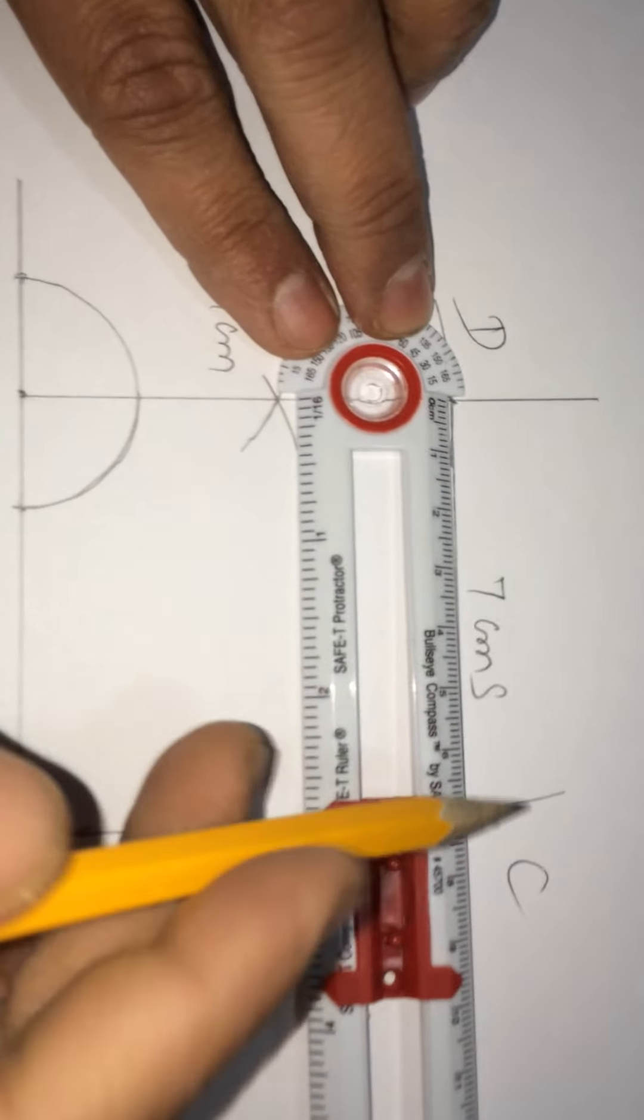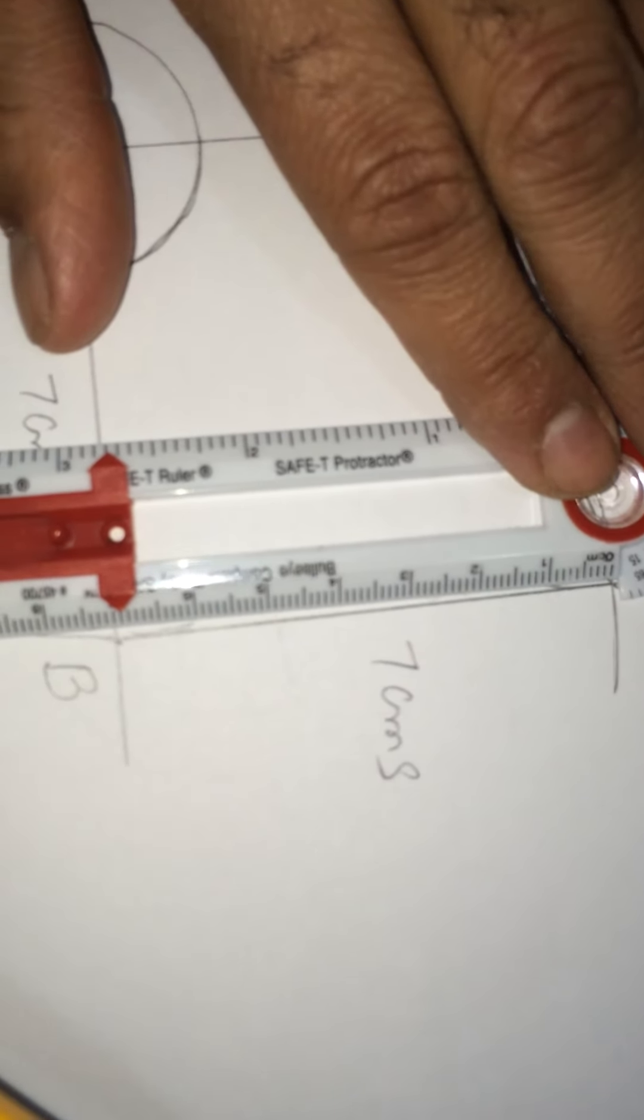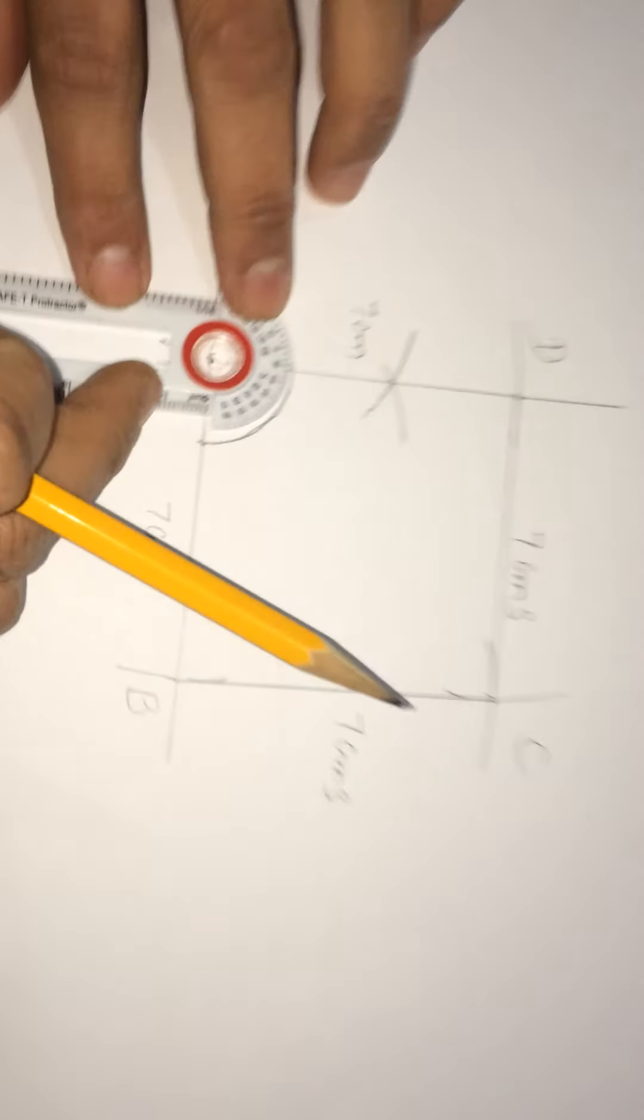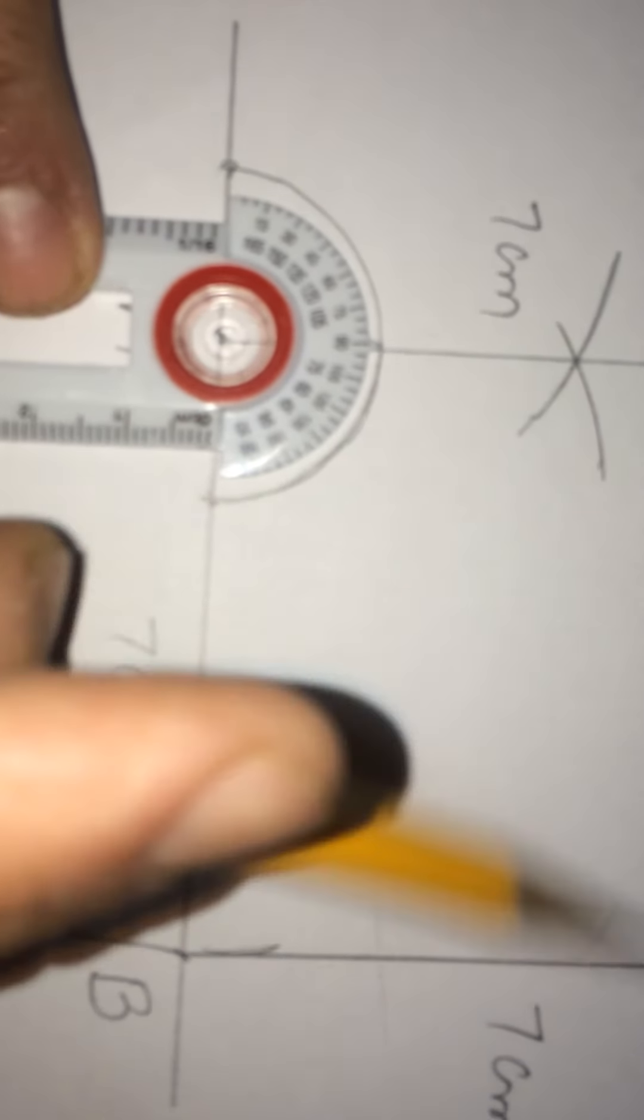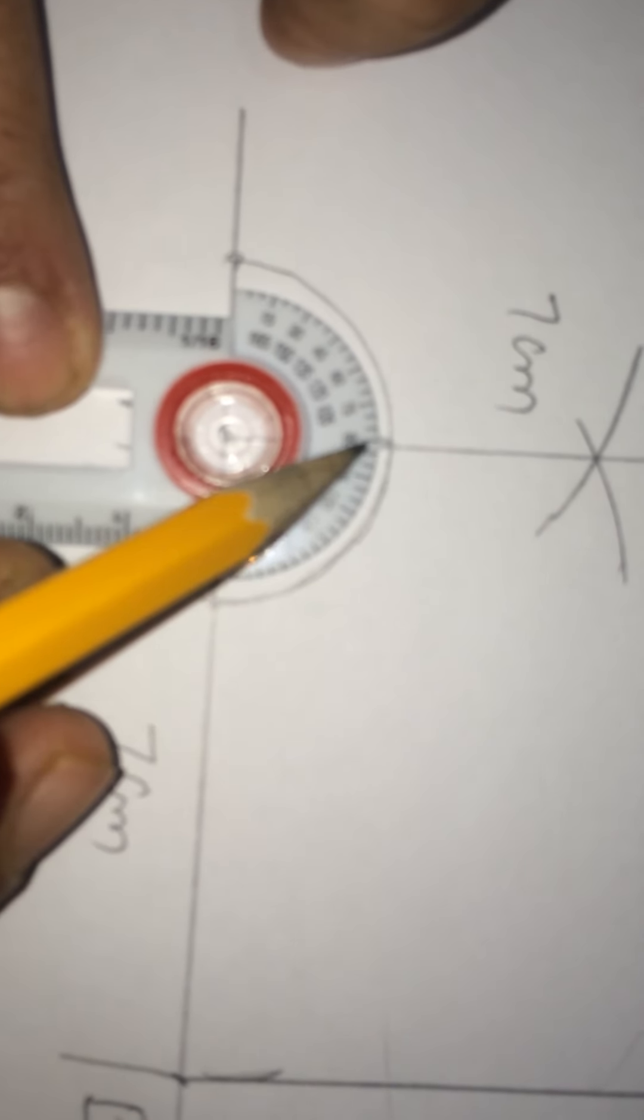From here to this, this is 7. From here to here, it is 7. And if you check this one, this is 7. And this one is also 7. If we measure this angle,